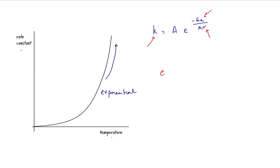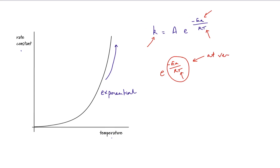The term e to the minus Ea over RT gives us the fraction of collisions with the required energy to react. As the temperature increases, the value of RT at the bottom gets bigger and bigger, so the term minus Ea over RT becomes smaller and smaller until it approaches zero at very high temperatures.